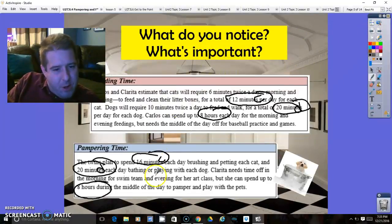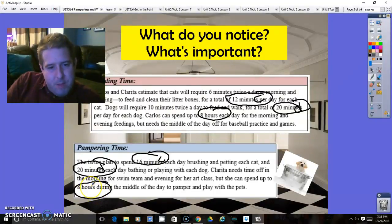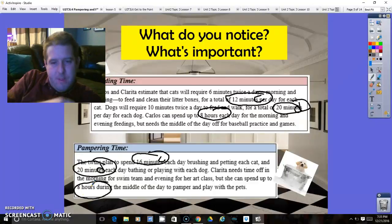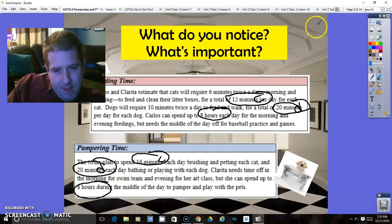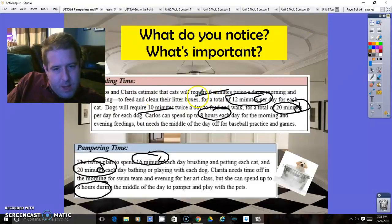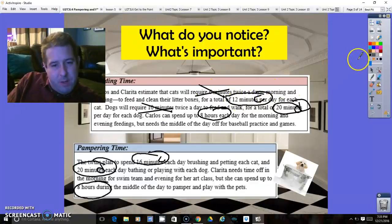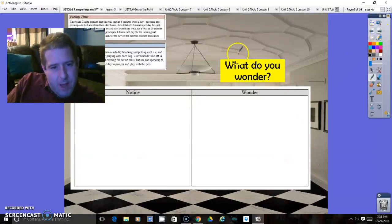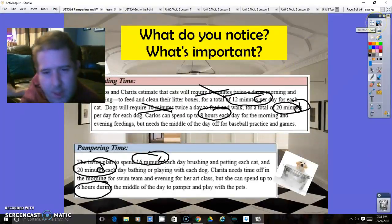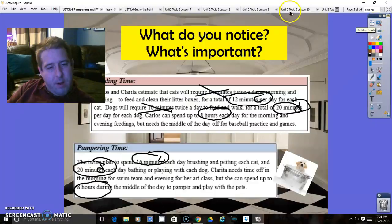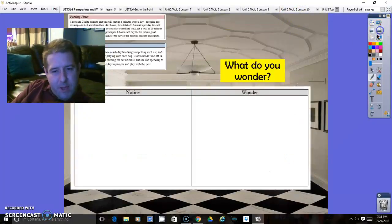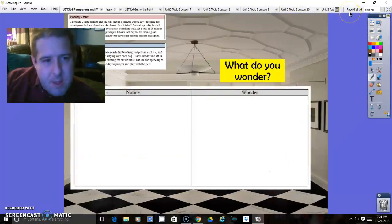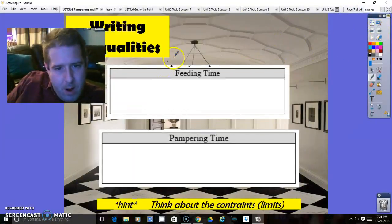So it looks like we have all the information that we need in order to write the equation. So the things that I noticed, something I noticed was that these were in minutes and this was in hours. That's a major, major thing that you need to take notice in because we need to do a conversion. We want everything to be the same. I also noticed that there were some numbers in here. Those are kind of like numbers that are throwing you off because 6 minutes twice a day is actually 12 minutes total. So I wonder, what are these equations going to look like? Are they going to have different rates of change? Are they going to have the same y-intercepts?